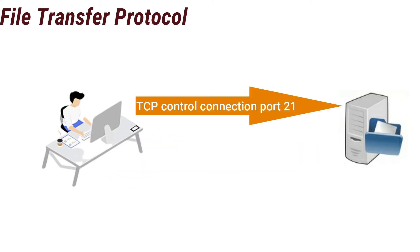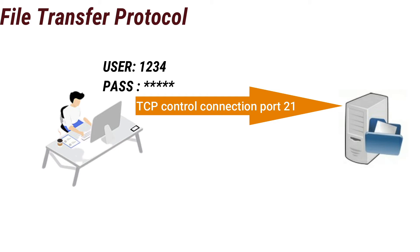When a user starts an FTP session with a remote host, the client side of FTP first initiates a TCP connection with the server side on server port number 21. This is the port where the server listens for FTP requests from clients. The client side of FTP sends the user identification and password over this control connection.